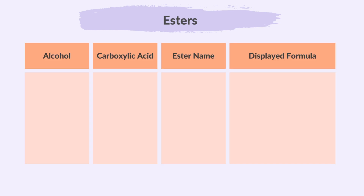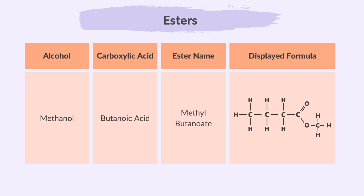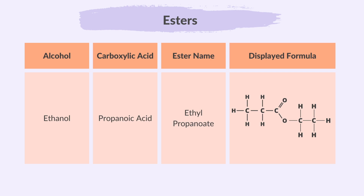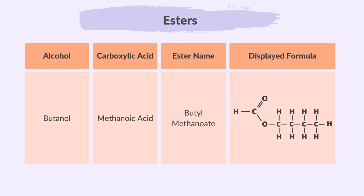Let's look at examples of naming and drawing displayed formulas of unbranched esters. When methanol reacts with butanoic acid, an ester called methyl butanoate is formed — notice that the name has the alcohol part first and the carboxylic acid part second. In the structural formula, however, the carboxylic acid part comes first, followed by the alcohol part. Further examples: ethanol and propanoic acid gives ethyl propanoate; butanol and methanoic acid gives butyl methanoate.